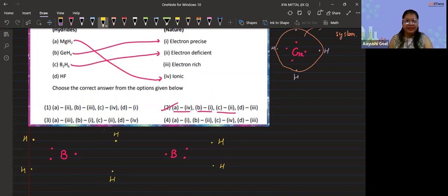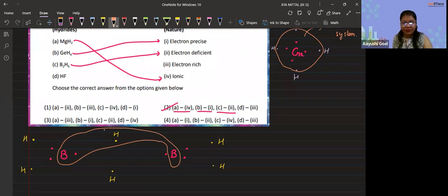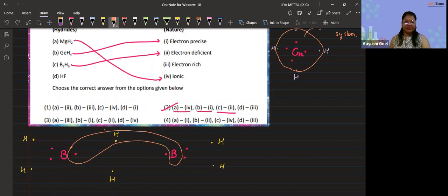The banana bond is formed like this, in which one boron is sharing its electron while the other is not sharing its electron portion. So this is technically your banana bond, which is in the shape of banana. That's why it is called a banana bond, and boron is also included in this one.